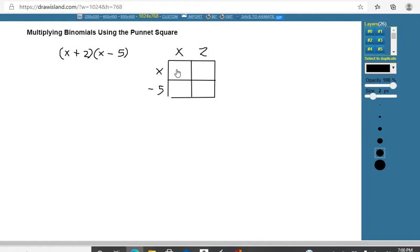Okay, so in this one, we're going to do x times x, which is just x squared. Then we're going to do x times 2, which is 2x. Then x times negative 5, which is negative 5x. And then negative 5 times 2, which is negative 10.